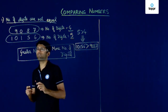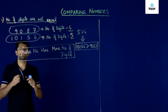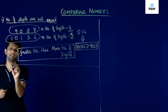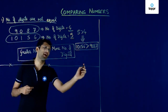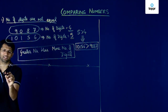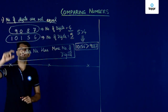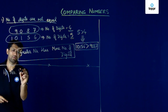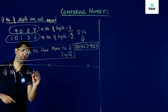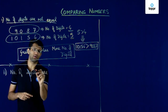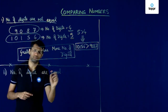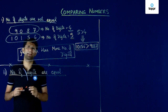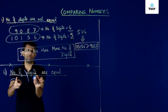We have now seen the first case in which the number of digits are unequal. Now we will see the second case, where we deal with numbers that have an equal number of digits. So in the second case, the number of digits in the two numbers will be exactly the same.